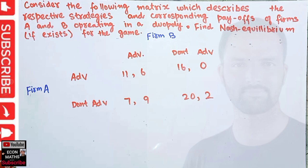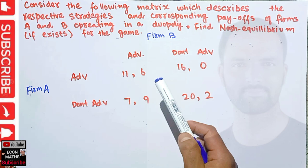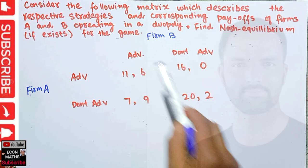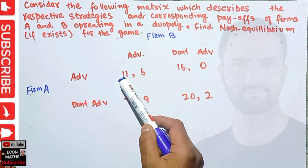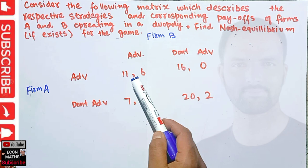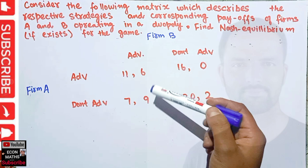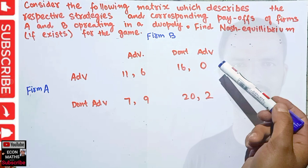We are given the strategies for Firm A and Firm B. Firm A can either advertise or not advertise; similarly, Firm B can either advertise or not advertise. The first number in each cell describes the payoff for Firm A, and the second number describes the payoff for Firm B.